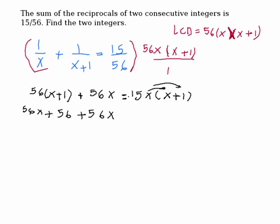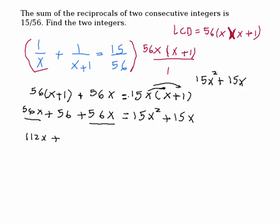If I distribute the right side, I get 15x squared plus 15x. Adding 56x and 56x gives 112. So we get 112x plus 56 is equal to 15x squared plus 15x.